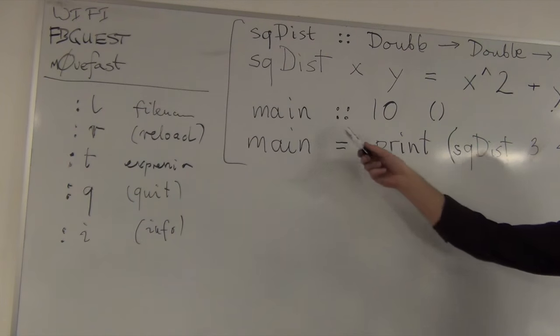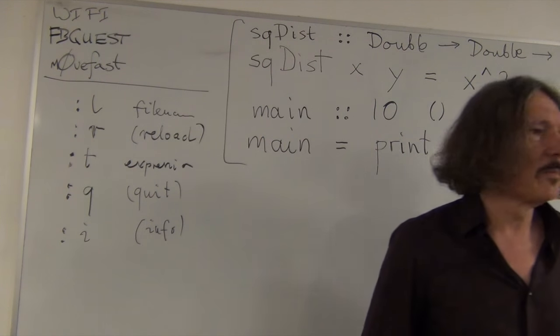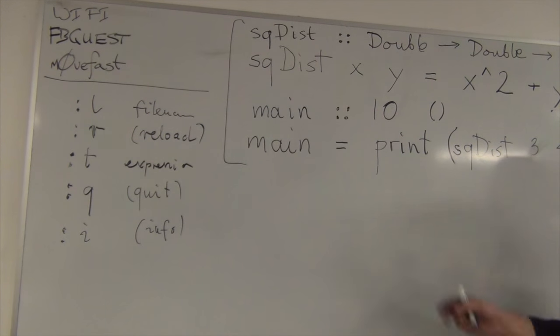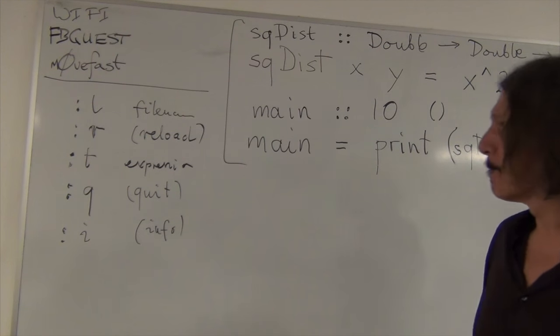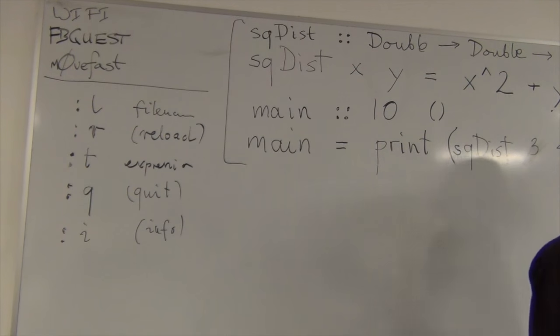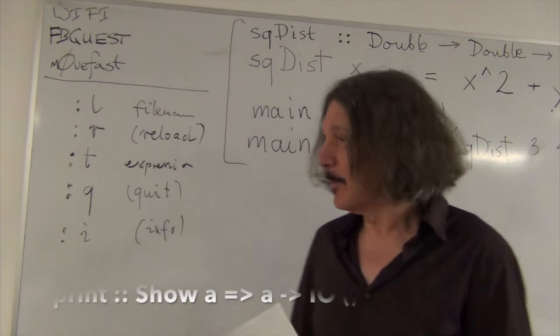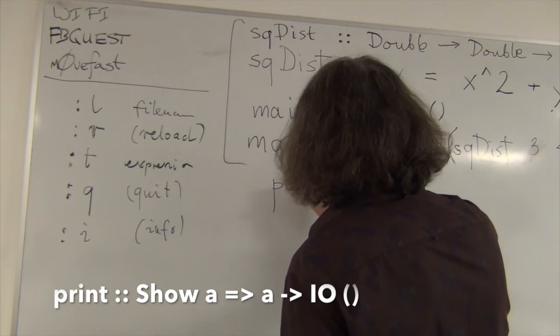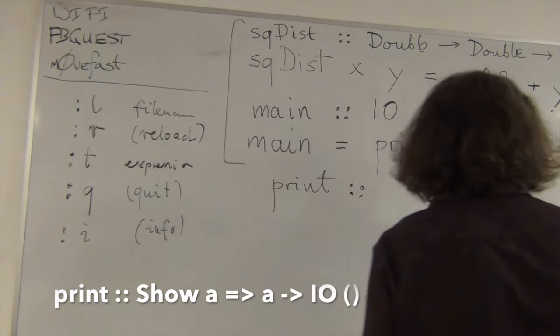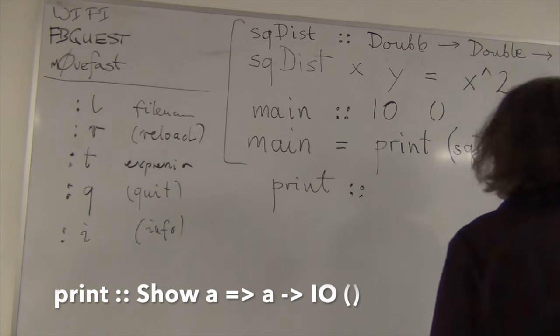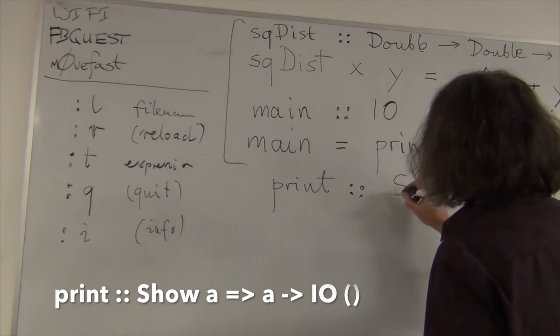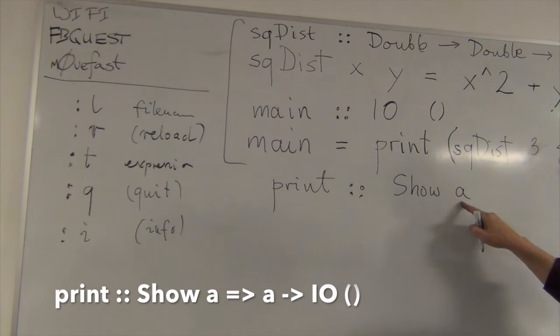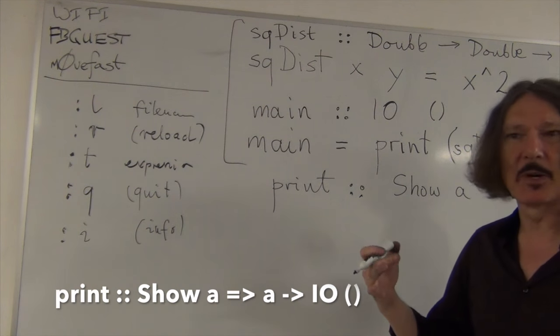So normally, people would not write the type signature for main. Or some people do, some people don't, because it's kind of obvious. And the compiler will figure it out easily, right? Can we also see what the type of print is? Half. Okay. So here's another funny type. I'll write it here for the . Type of print is, and now,